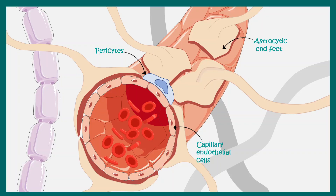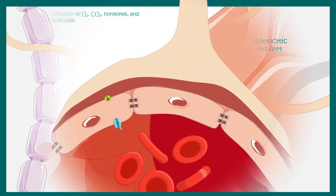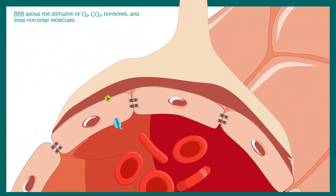Now we are going to zoom into one of the junctions of the capillary endothelial cells. We can see there are several junction molecules present between two capillary endothelial cells, and there are a bunch of transporters which are also present. The blood-brain barrier allows the diffusion of oxygen and carbon dioxide, some hormones, and non-polar molecules.